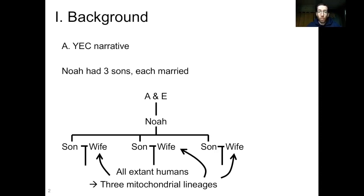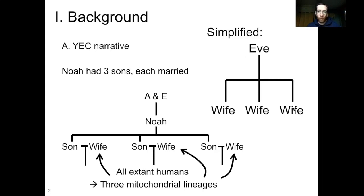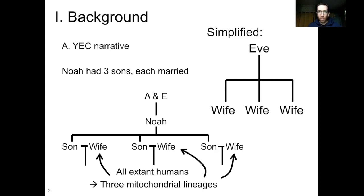To simplify this representation a little bit, we can look at it like this. We have Eve, which in the parlance of coalescence analysis for the mitochondrial DNA represents the mitochondrial Eve. The literal Eve in this case is also mitochondrial Eve. And then eventually descended from Eve, you have the three wives of Noah's sons, and all human mitochondrial DNA is descended from those three individuals. So again, we should have three distinct clades, or three lineages, of human mitochondrial DNA.